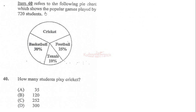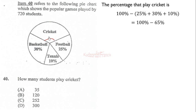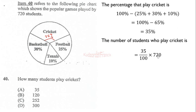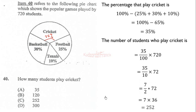Item 40 refers to the following pie chart showing popular games played by 720 students. All percentages must add up to 100 percent. By subtracting the sum of the given percentages from 100, we get 35 percent for cricket. So 35 percent times 720 equals 35 over 100 times 720, which simplifies to 252. Therefore 252 students play cricket.